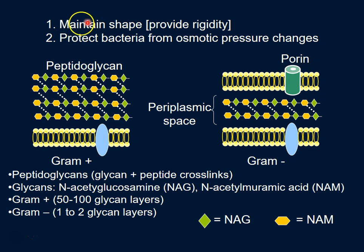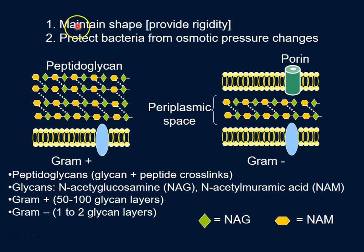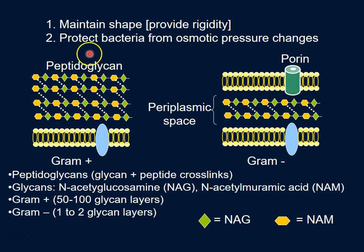As you know, the cell wall provides a shape to bacteria and provides a level of rigidity so that the shape is maintained — that's how we're able to identify rod-shaped and cocci bacteria. The cell wall also protects the bacteria from changes in osmotic pressure, and therefore the bacteria is able to survive in different types of environments.